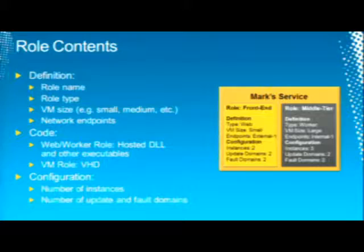Inside a role, there's a name, a type, VM size — small, medium, large, extra large, or extra small — network endpoints defined for it. External endpoints map your public DNS address to an internal port on any node in your service. Internal endpoints let different roles talk to each other via TCP/IP. The role also includes the code — in the case of a web or worker role, that's a DLL which is the core entry point, loaded into a host process. For a VM role, you give us a VHD with your application baked into it. There's also configuration: the number of instances — one for dev/test, two minimum for production due to the SLA — and the number of update and fault domains.